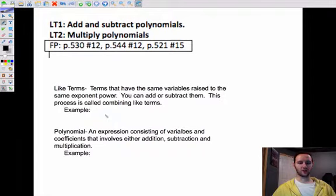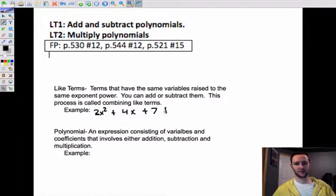For example, you could have 3x squared plus 4x plus 7 plus 8x squared minus 2x minus 100.